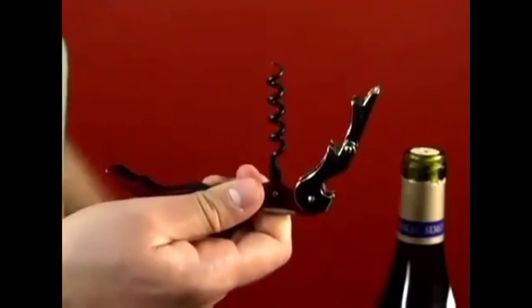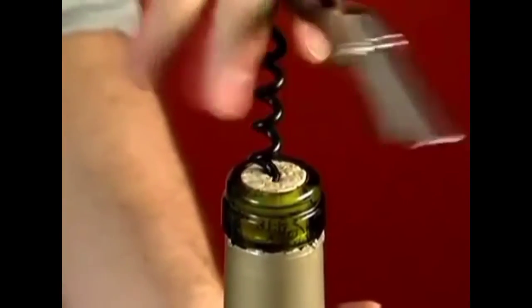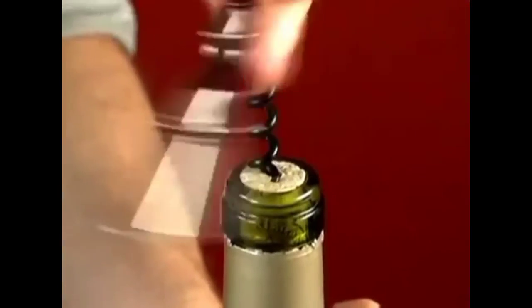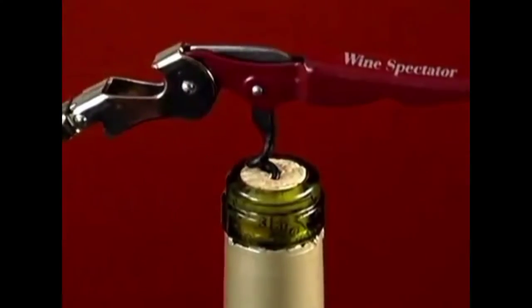Next, open the lever and the screw. Hold the bottle in your non-dominant hand. With your other hand, insert the tip of the screw into the cork near the center. Rotate the screw down into the cork until a single spiral loop shows at the top.